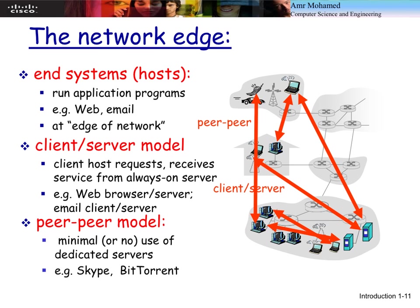The network edge is composed of end systems like hosts, laptops, or cell phones running different applications — web, email, video, audio. This application information needs to be delivered over the network using two different models: the client-server model and the peer-to-peer model.